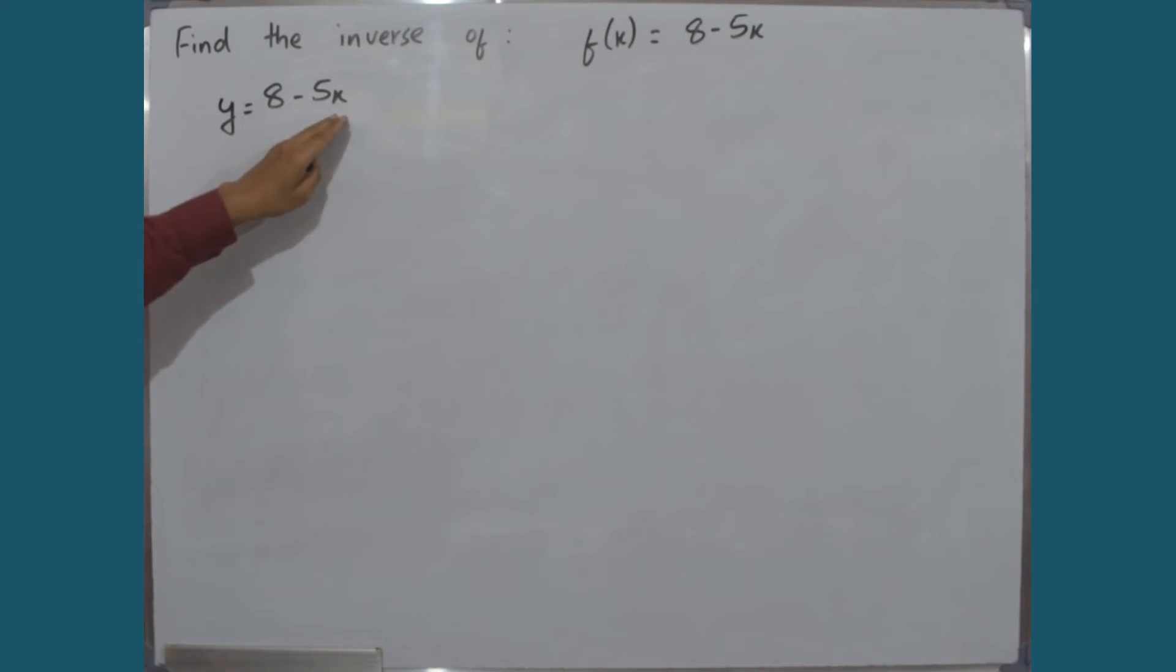For different values of x, we won't get the same value of y. Different x values will give us different values of y. So this proves that this is a one-to-one and onto function.